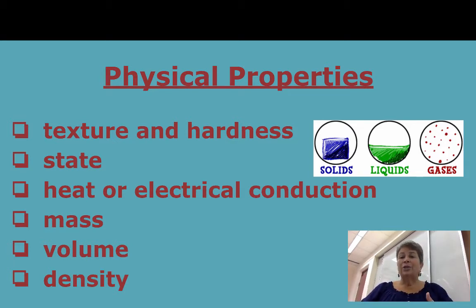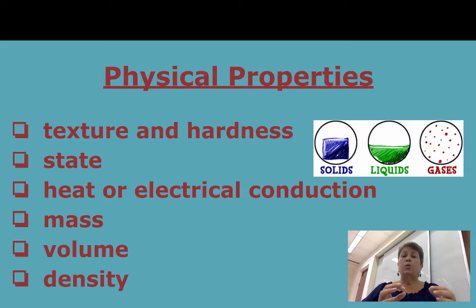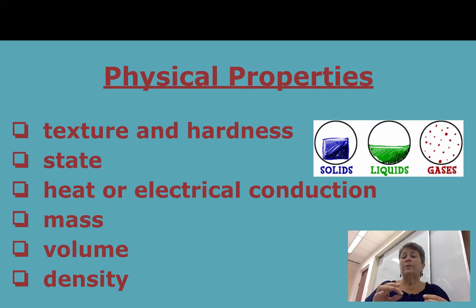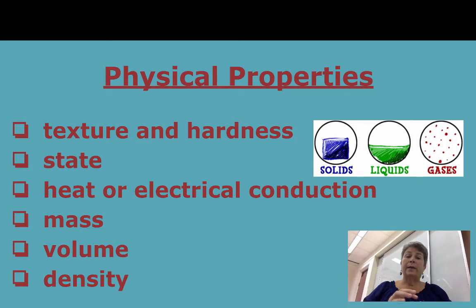The conduction of heat or electricity is also a physical property. If a substance transfers heat through it and warms up really easily, we say it's a good conductor of heat or thermal energy. And if electric current passes through it easily, we say it's a good conductor of electricity.